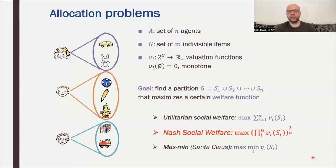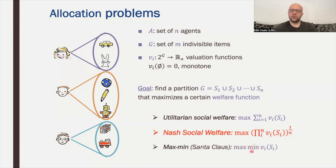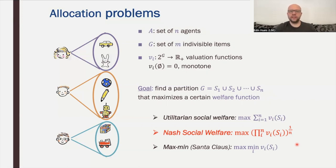We will be talking about three welfare functions. The first is to allocate goods to agents in order to maximize the total sum of their valuations, called utilitarian social welfare — the most efficient way of allocating goods. On the completely different side, we could try to maximize the least happy agent, or in other words, the maximum over all allocations of the minimum over all agents of what they get. This can be considered an extremely fair way of allocating goods. But the objective we will be mostly interested in is Nash social welfare.